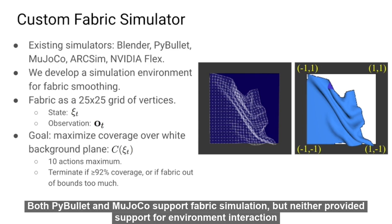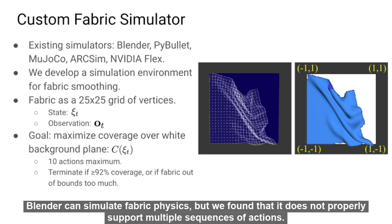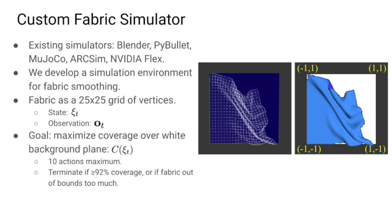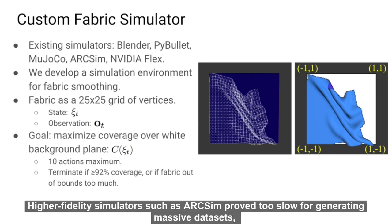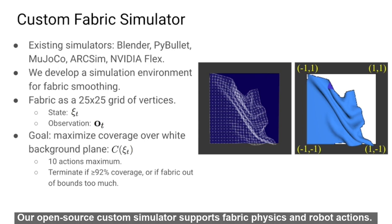Both PyBullet and Mujoco support fabric simulation but neither provide support for environment interaction or have sufficiently accurate physics for smoothing until concurrent work. Blender can simulate fabric physics but we found that it does not properly support multiple sequences of action. Higher fidelity simulators such as ArcSim prove too slow for generating massive datasets, and the simulator from NVIDIA Flex does not expose an easy-to-use API for fabric. Our open source custom simulator supports fabric physics and robot action.